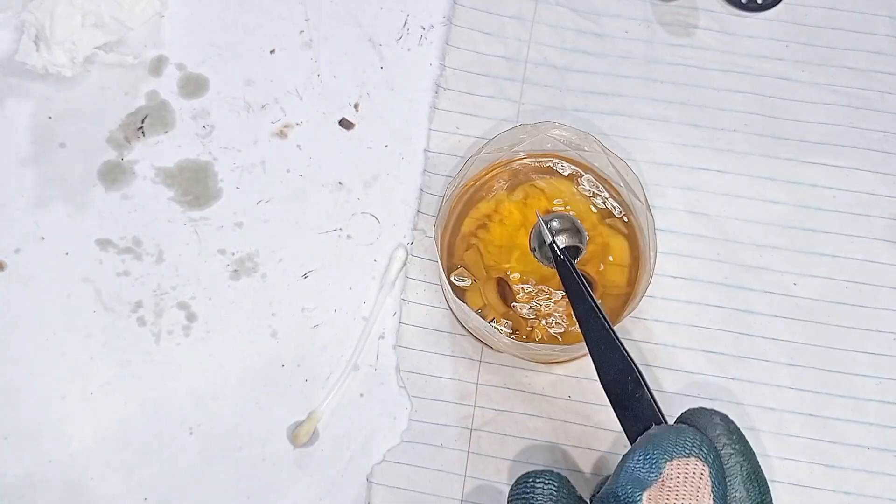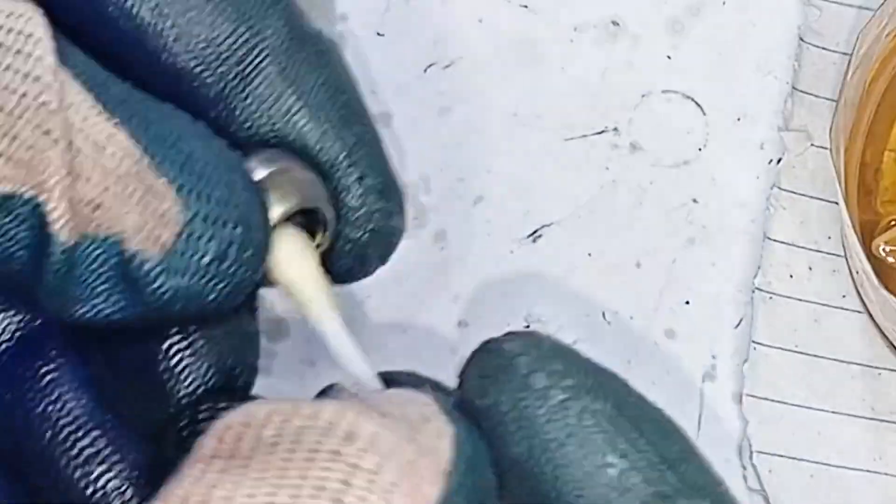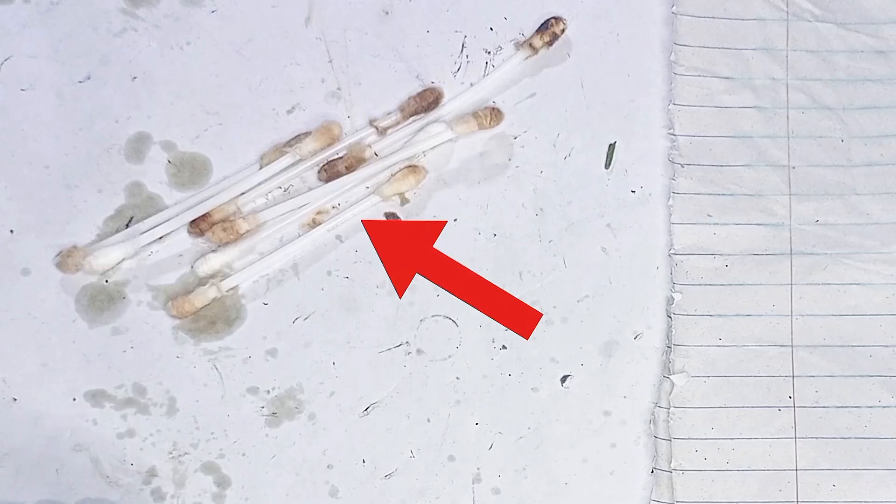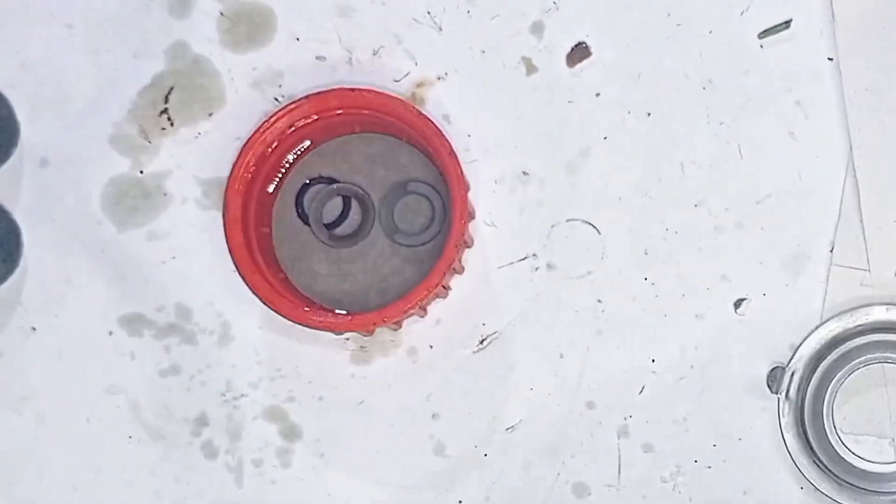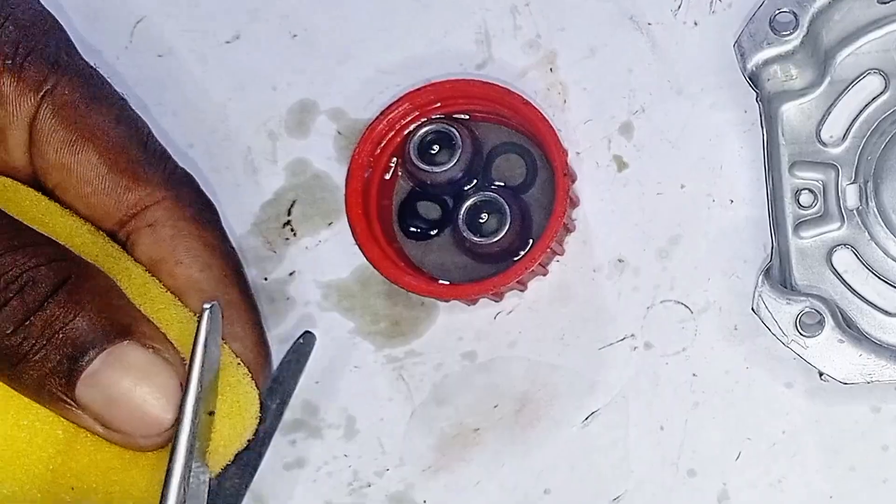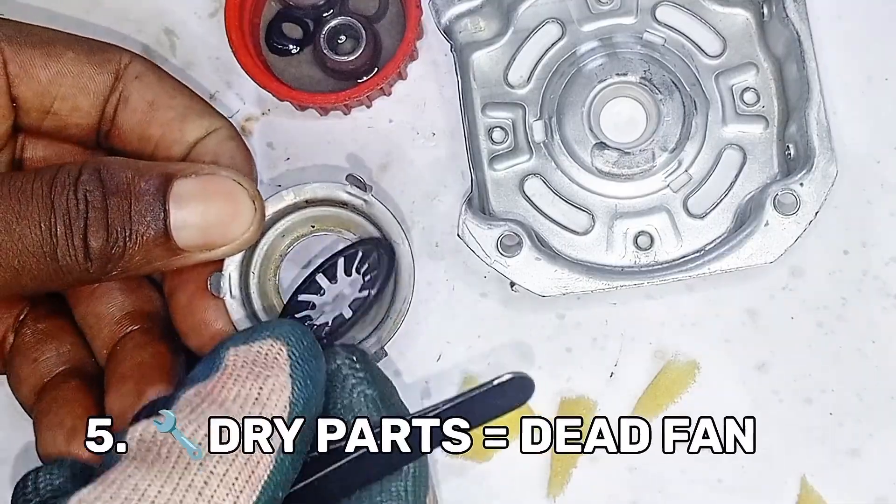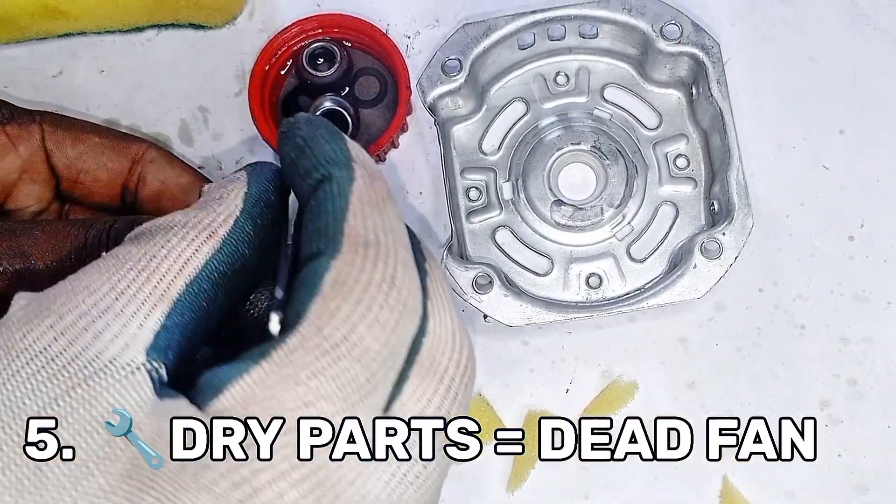Bush bearings—small parts, big impact. They'll grind if dirt stays inside. Scrub until the earbud emerges completely clean. See that pile? That's what's been sabotaging your fan. Now watch this closely. Some fans die not from fault but from friction. A little oil in the right place saves the whole motor. Reason number five: dry parts equals dead fan.